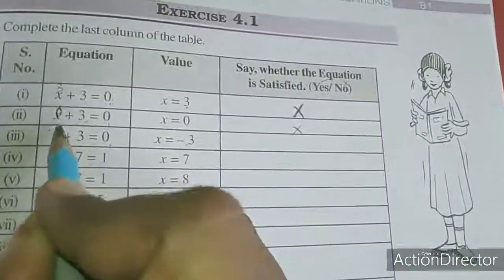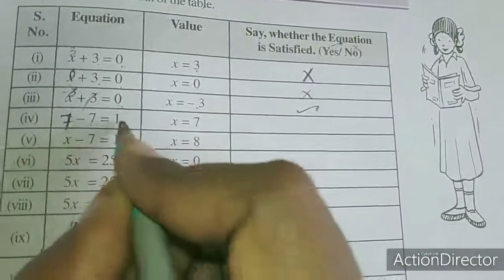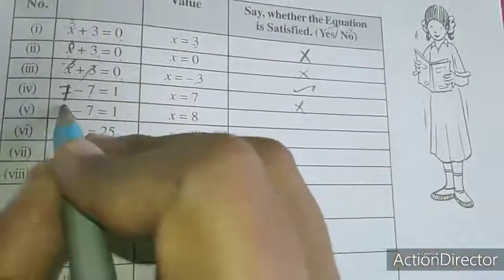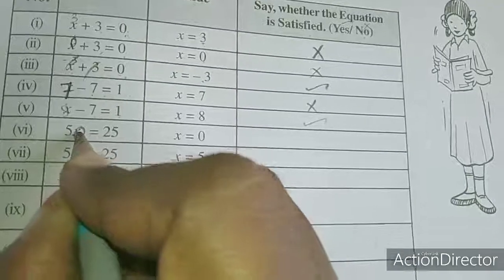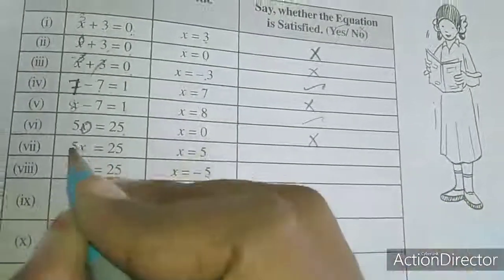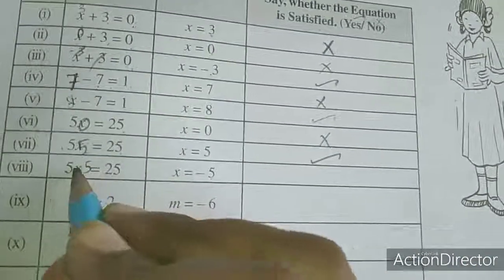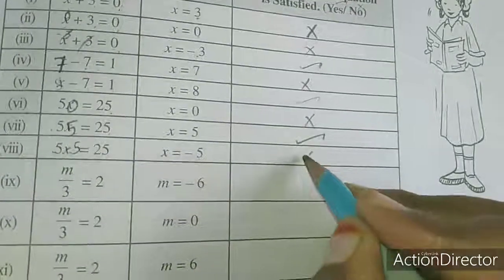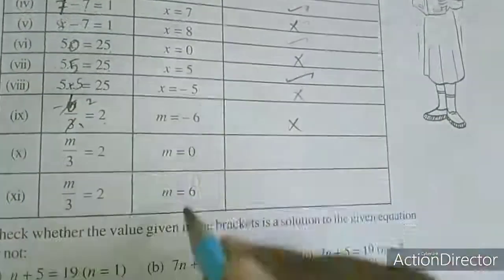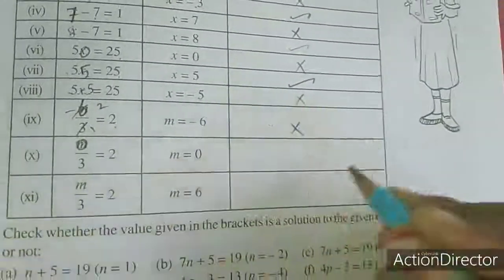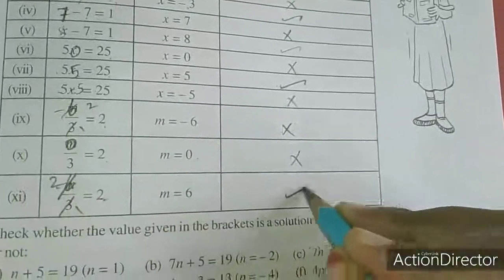So this is minus 3. Now for x = 5: 5 into 5 is 25, so this is wrong. Minus 5: 5 into 5 is 25, plus into minus gives minus 25, plus 25, so it is wrong. Minus 6: 1 times 3 is 3, 2 times 3 is 6, but minus 2 — here they gave plus 2, so it is wrong. 0 divided by anything is 0 only, but they gave 2, so this is wrong. For m by 3: 1 times 3 is 3, 2 times 3 is 6 — so the value is 2 only, equal. So it is yes. First sum is completed.